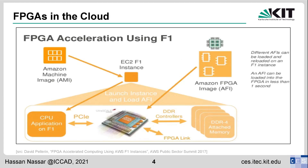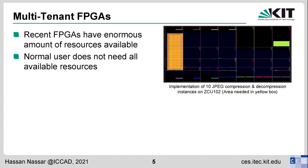As FPGAs grew, so did their applications, and one application gaining attraction is FPGAs in the cloud. For example, Amazon currently offers the ability to use FPGAs as part of its web services, providing mainly Xilinx UltraScale+ devices to users who can run their own designs. This is the setup where the attack our countermeasure targets can occur, as FPGAs in the cloud may be used in multi-tenant scenarios. But what is multi-tenancy?